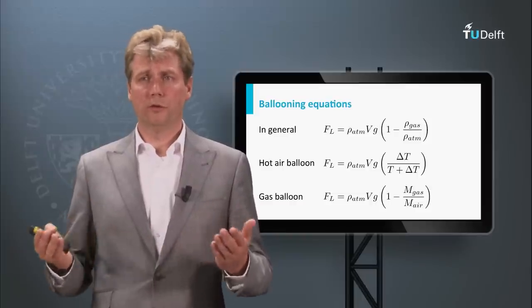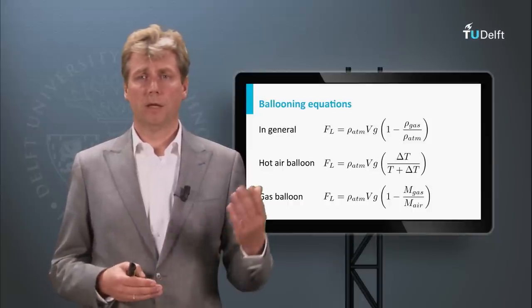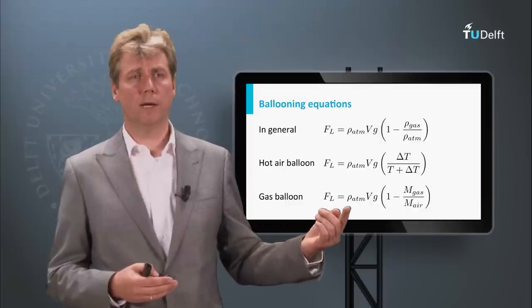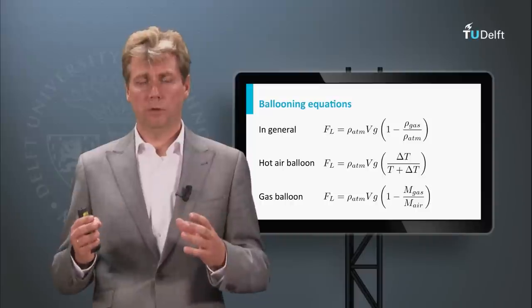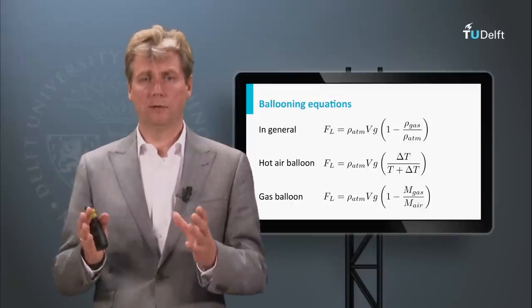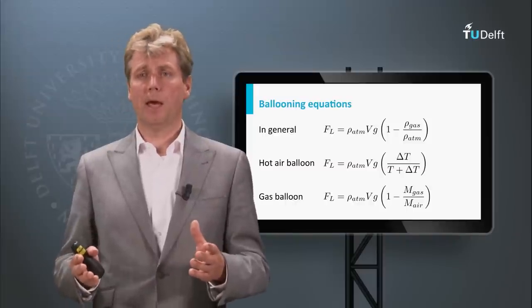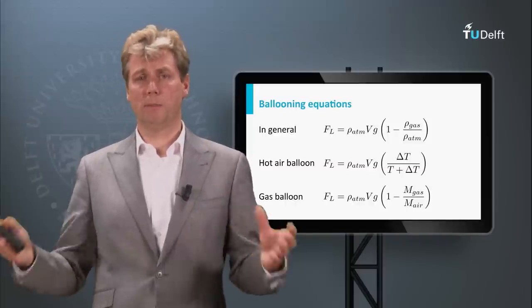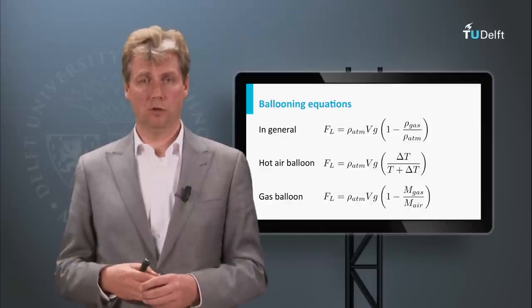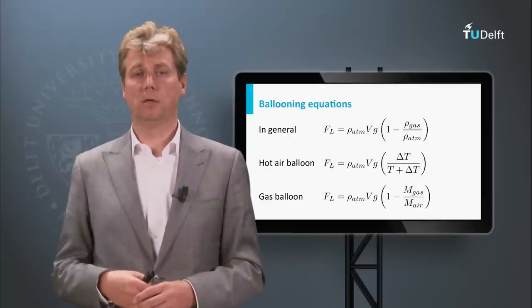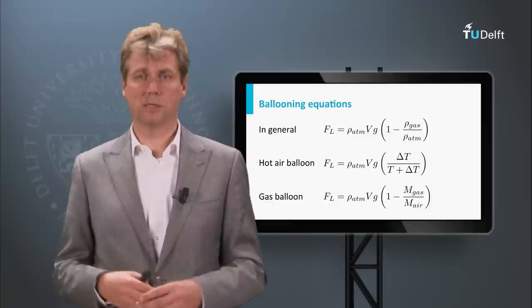You might wonder what altitude you can reach with a helium balloon. That's actually dependent on the volume. You may know weather balloons are relatively small at sea level and the balloon is very floppy. That's to allow the gas to expand when it gets higher. The maximum altitude is determined by the maximum volume of the helium balloon. If this volume gets too large, the balloon will explode, and that's the maximum altitude.